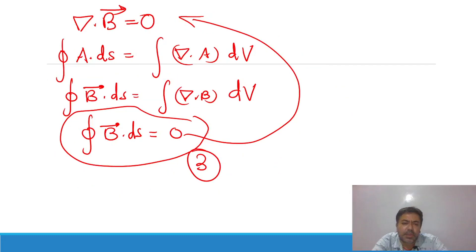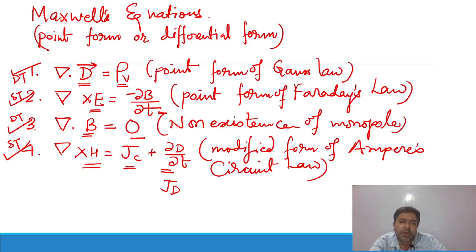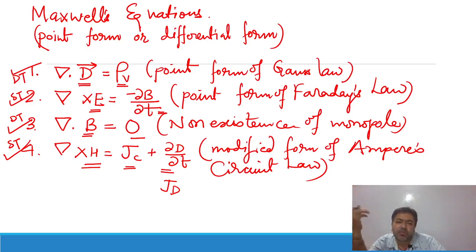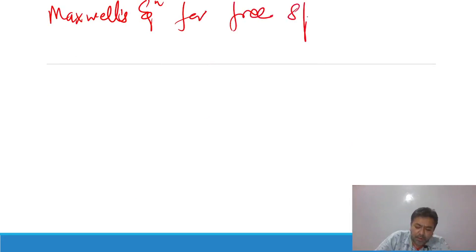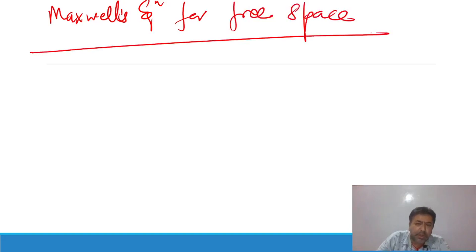Thus, if we know the point form of Maxwell's equations, we can use the divergence theorem and Stokes' theorem to generate the integral form. Now let us also understand Maxwell's equations for free space, which is another important topic.